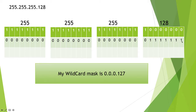The zeros become ones. So my wildcard mask is 0.0.0.127. Where do I get the 127? I simply add 64+32+16+8+4+2+1 and that equals 127. A little shortcut for wildcard masks: I can look at the last network bit that was on and just subtract 1 from it. That will also give me the wildcard mask. So this was 128; if I subtract 1, that gives me 127.